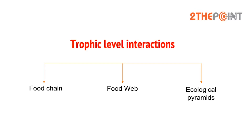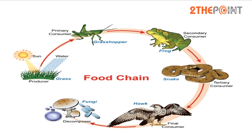There are different kinds of trophic levels — autotrophs, which are plants, and herbivores and carnivores, which are animals. These different trophic levels interact amongst themselves to facilitate the flow of energy within the ecosystem. These interactions between different trophic levels can be of three types: food chains, food web, and ecological pyramids.